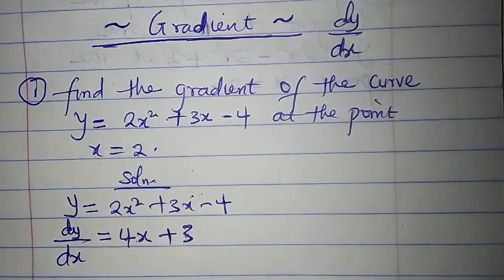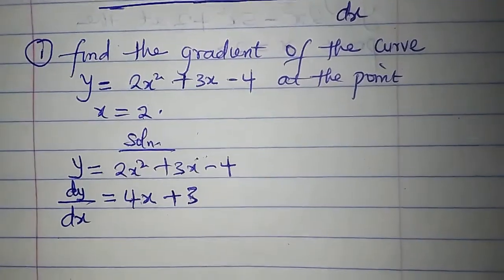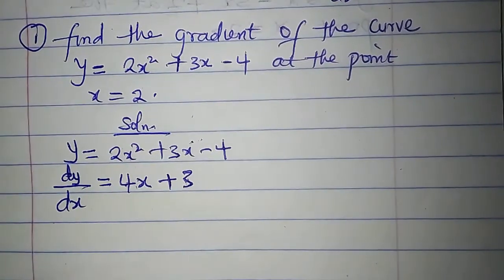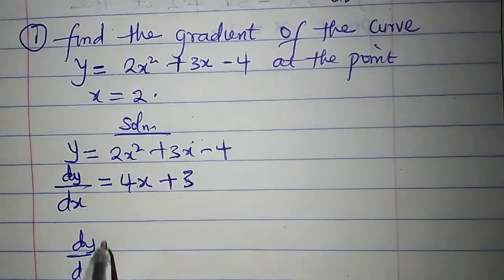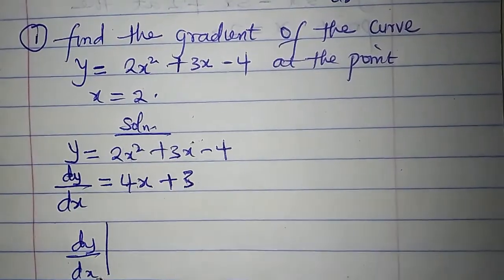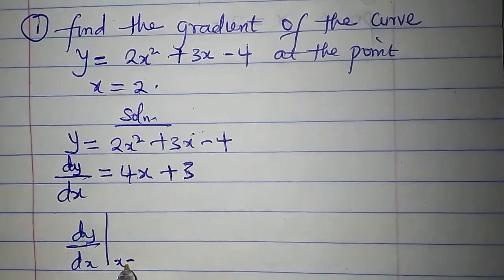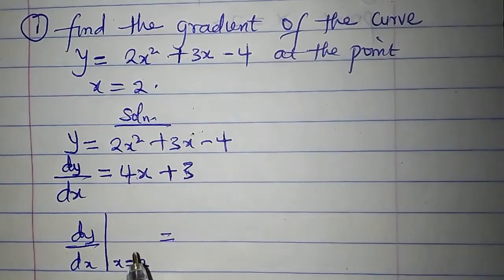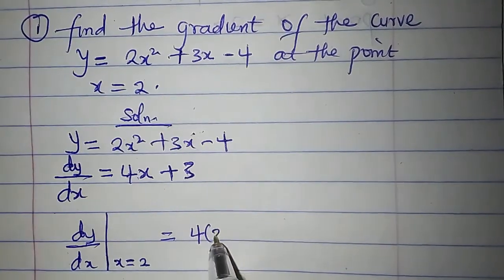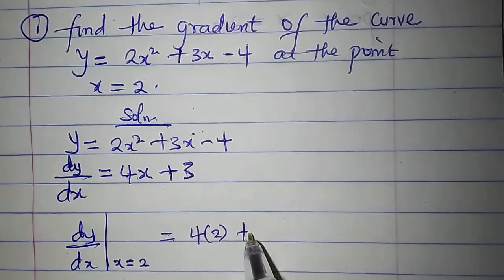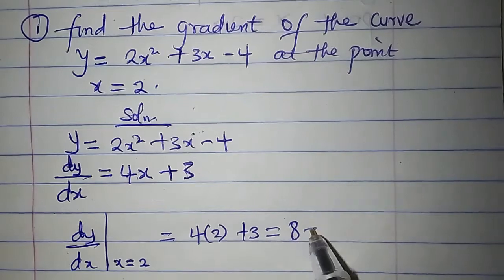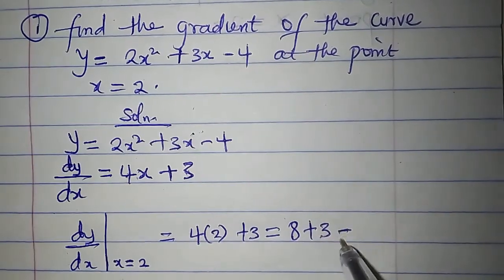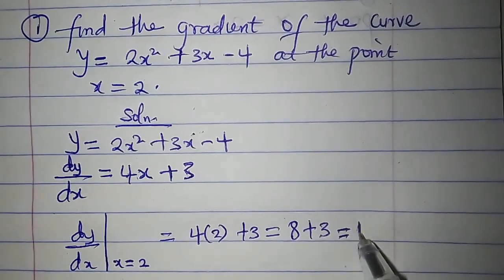At x = 2, the gradient of the curve — dy/dx at x = 2 — in place of x we write 2: 4 times 2 plus 3. 4 times 2 is 8, and 8 plus 3 is 11. So the gradient of the curve at x = 2 is 11.